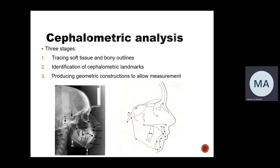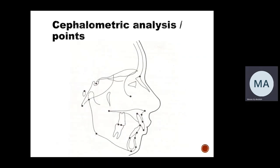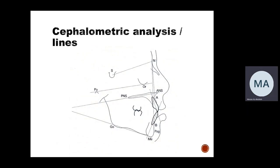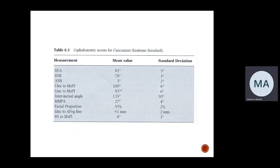Analyzing the radiograph follows these steps: tracing of soft tissues and bony outlines, then identification of cephalometric landmarks, and then you start to connect these points to form geometric constructions — lines, planes, angles — and measure angles and lines.